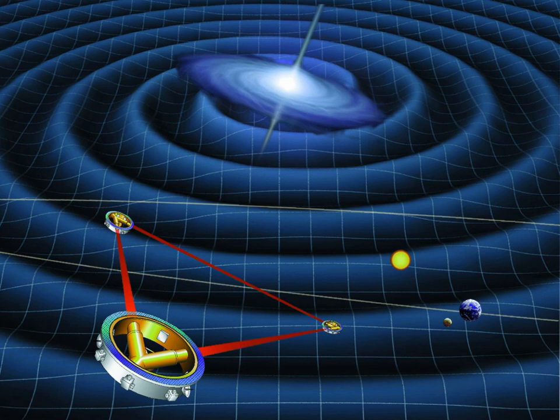LISA will be able to detect the gravitational waves from the merger of a pair of massive black holes with a chirp mass between 10^3 and 10^7 solar masses all the way back to their earliest formation at redshift around z approximately equals 15. The most conservative population models expect at least a few such events to happen each year.